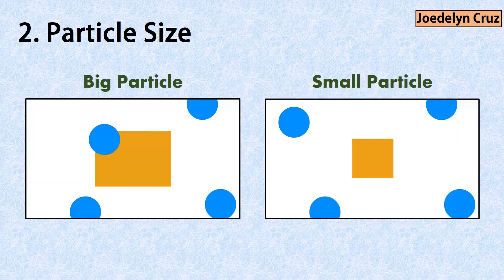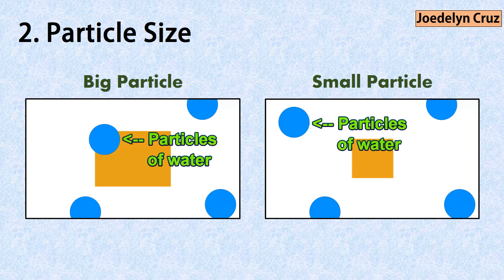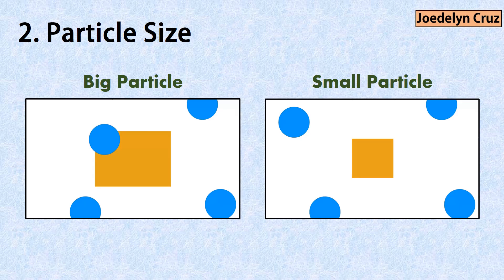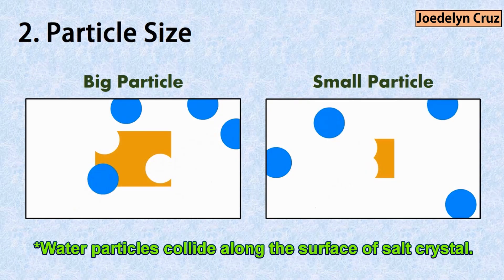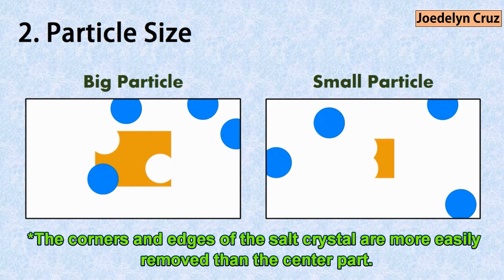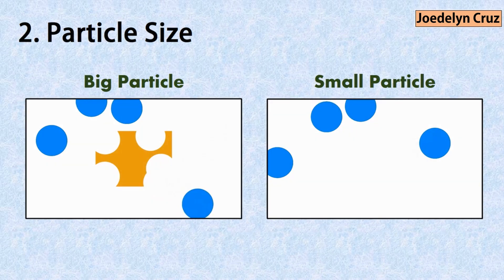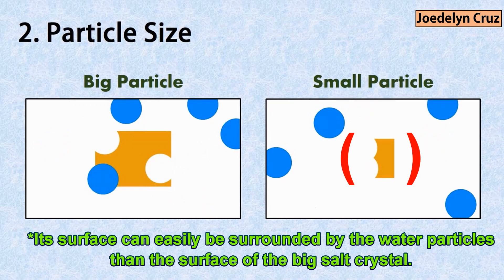Let us observe how fast large and small particles dissolve in a solvent. The blue circles represent the water particles. Water particles collide along the surface of the salt crystal. The corners and edges of the salt crystal are more easily removed than the center part. So the small salt crystal dissolves faster because its surface can easily be surrounded by the water particles than the surface of the big salt crystal.